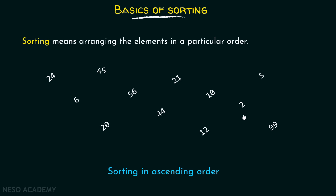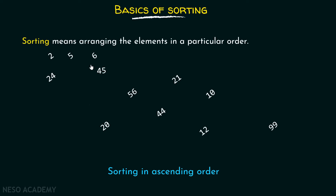Let's take this element and place it in the first position. Now let's find out the second smallest element — you can see this is the second smallest. Let's place it here. Then we will place the third smallest element, then the fourth smallest element after 6, and then we can place 12 after 10.